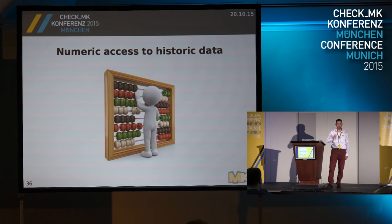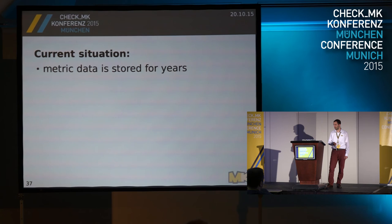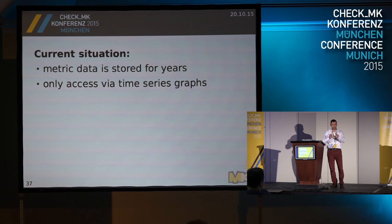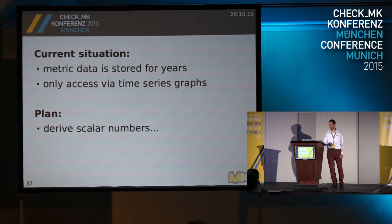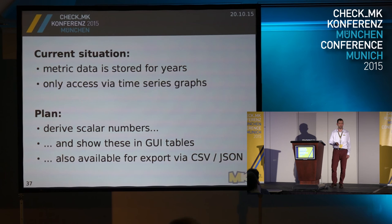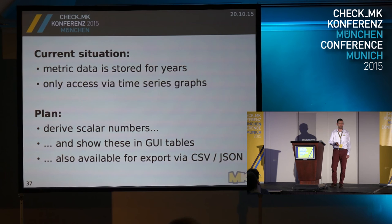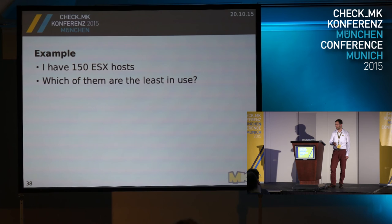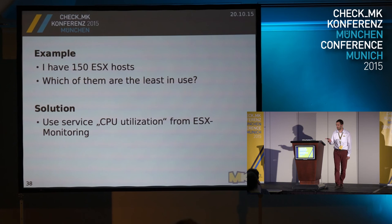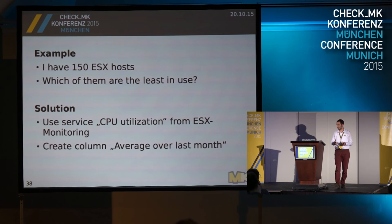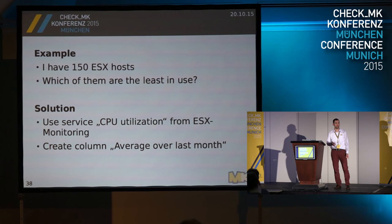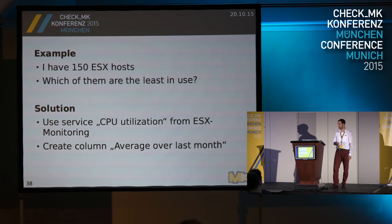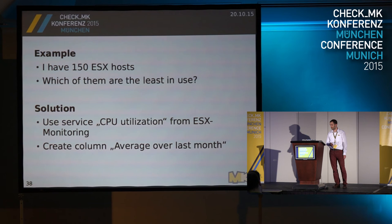With historic data you can do a lot more — not just a graphic curve, but a number. We have metric data stored for years, but we can only access it via graph images. It would be interesting to derive numbers from that data and show them in the multi-site GUI. For example: I have 150 ESX hosts — which 10 can be shut down? Which are almost idle or at full performance? Take the CPU utilization from ESX monitoring, calculate the average from last month, and that becomes a number you can put in a table and sort by top or bottom 10.